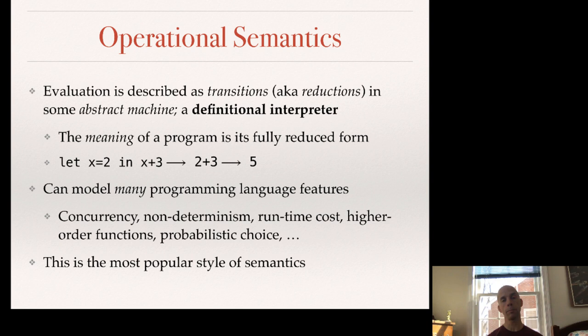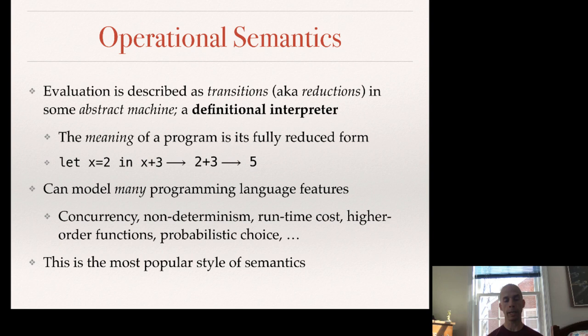Operational semantics is the most popular style simply because it is straightforward to use — it's easy to write down transition rules and to use those rules to prove properties about programs. Importantly, operational semantics can model many programming language features in modern languages, like concurrency and non-determinism, and can model meta-properties like runtime costs, which are important for proving things about the running time of programs.